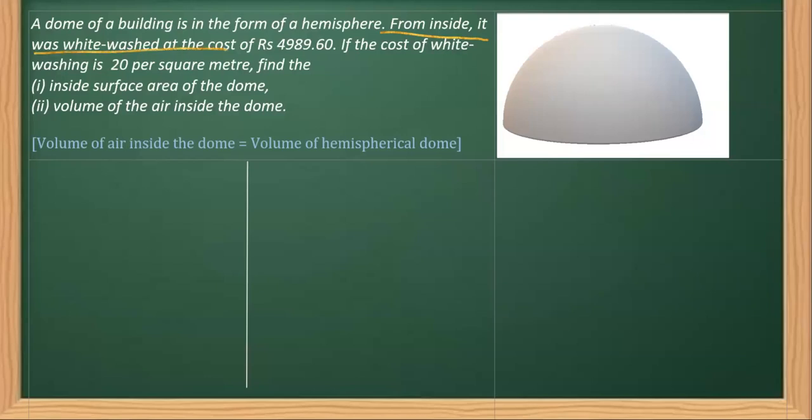The cost involved in whitewashing is 4989.60. It also states that the cost of whitewashing is at the rate of rupees 20 per square meter. That means for every square meter we have to pay rupees 20.